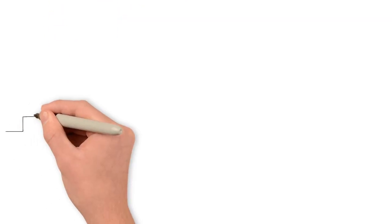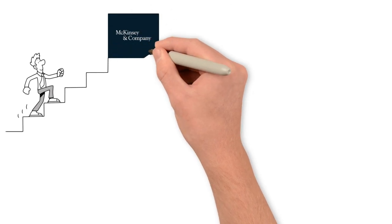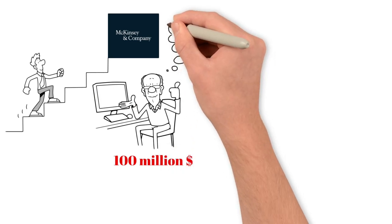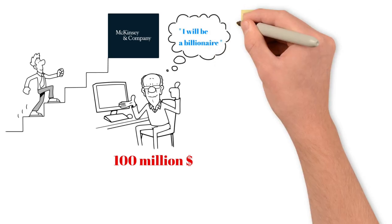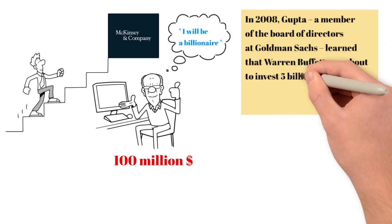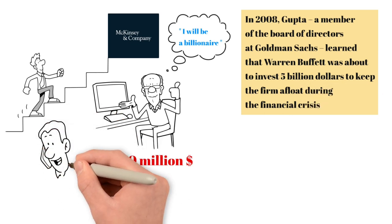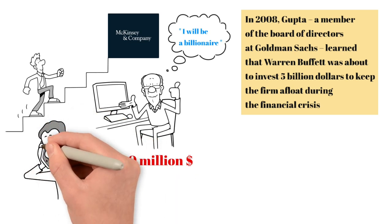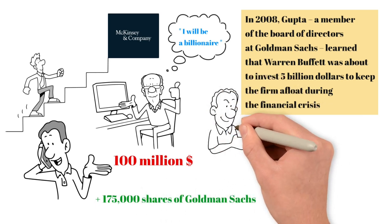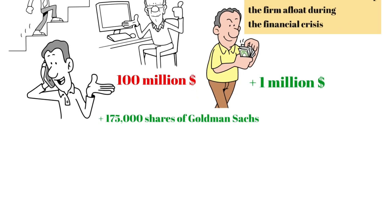Just ask Rajat Gupta. Born in a slum in Kolkata, India, Gupta worked his way up the corporate ladder to become the CEO of management consulting firm McKinsey. When he retired in 2007, he was worth $100 million. He could have done anything. But Gupta was envious. He wanted to be a billionaire. In 2008, Gupta, a member of the board of directors at Goldman Sachs, learned that Warren Buffett was about to invest $5 billion to keep the firm afloat during the financial crisis. Sixteen seconds after hearing this news on a conference call, long before it was made public, Gupta dialed the number of a hedge fund manager and bought 175,000 shares of Goldman Sachs. This was insider trading and strictly illegal. Gupta didn't care. He'd just made an easy $1 million.